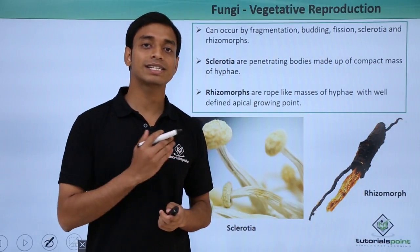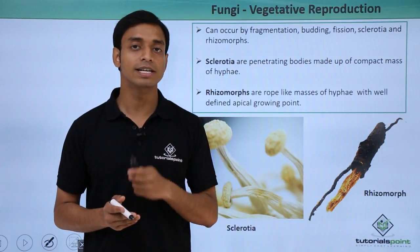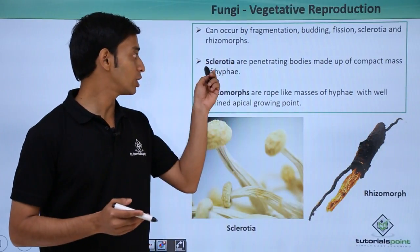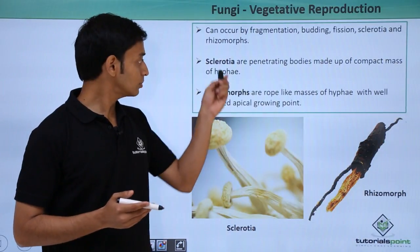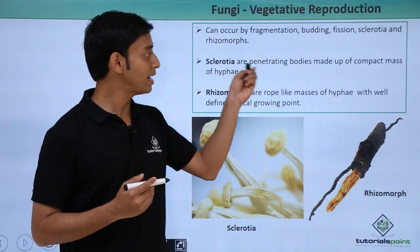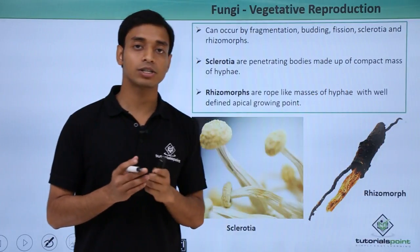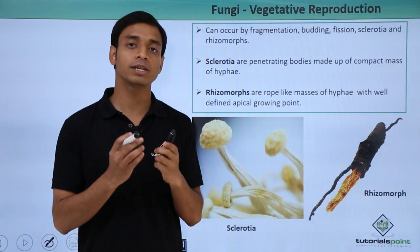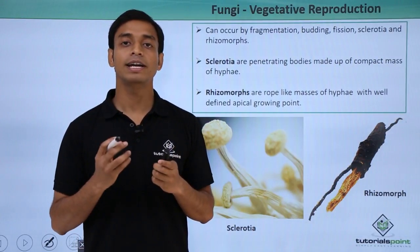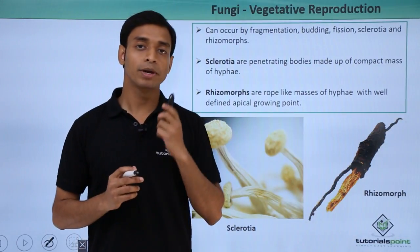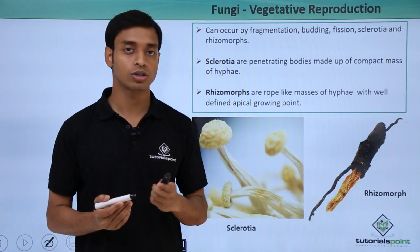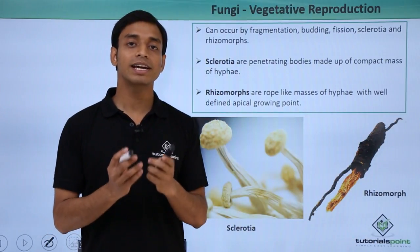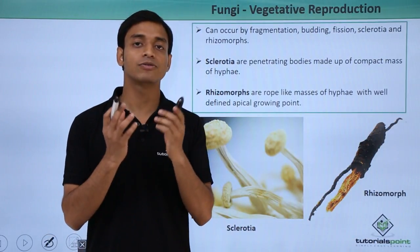Now we are going to talk about all these types in detail. First, let us talk about sclerotia. Concentrating on this picture, sclerotia are penetrating bodies which are made up of compact masses of hyphae. These penetrating bodies help in the penetration of hyphae into the host organism, because of which the fungus can obtain nutrients from the host.